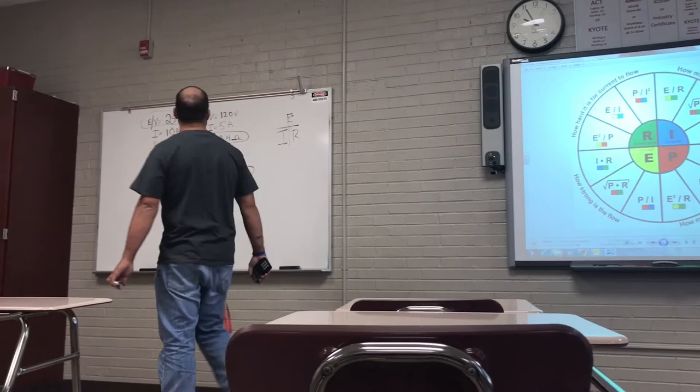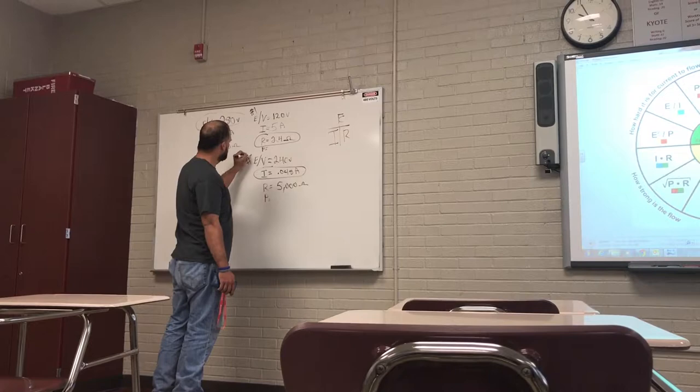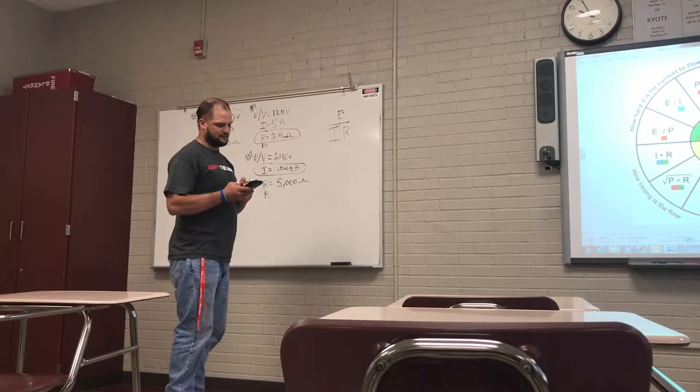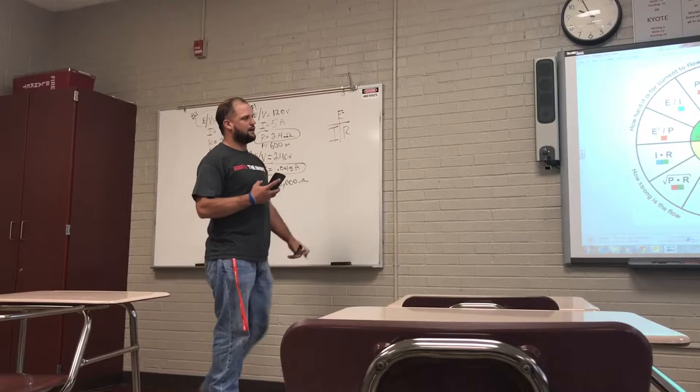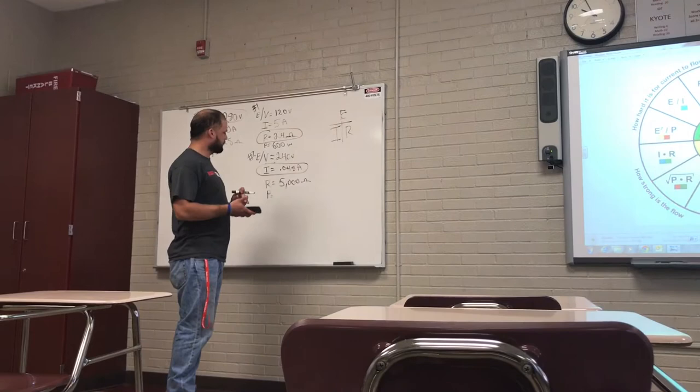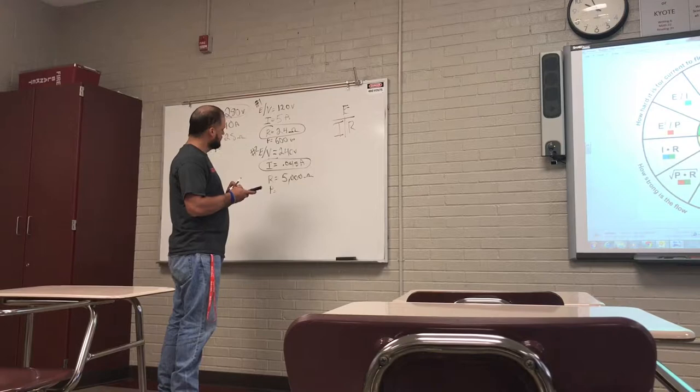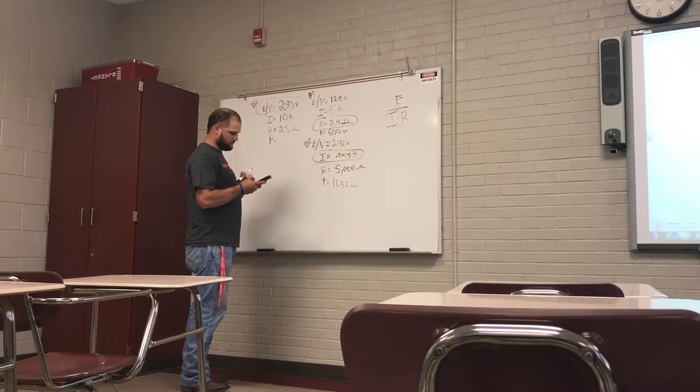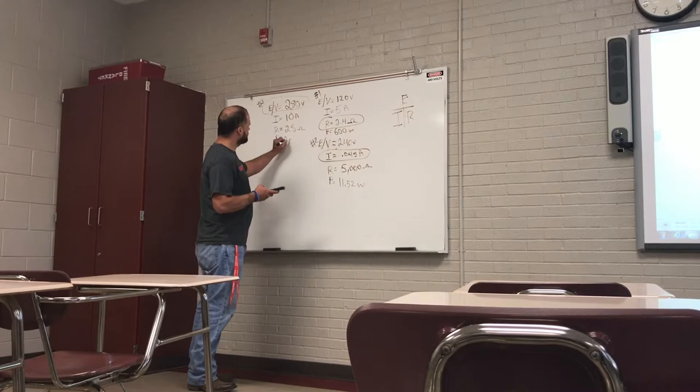So over here we can do for this problem number one. Number one here, this is number two, and this is problem number three. So over here on number one, we can do 120 times 5. That equals 600 watts. Power is going to stand for watts. So power is your wattage. Now down here, we're going to do 240 times 0.048 equals 11.52 watts. And over here, we're going to do 280 times 10. That equals 2,800 watts.